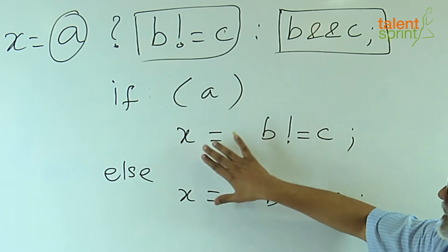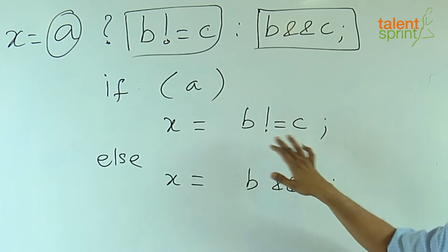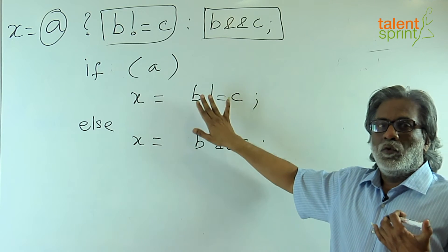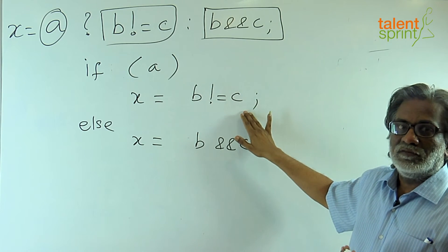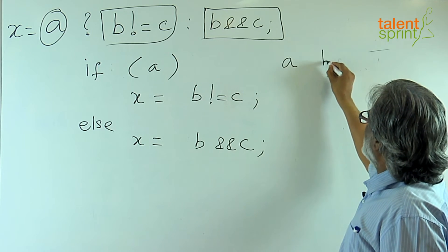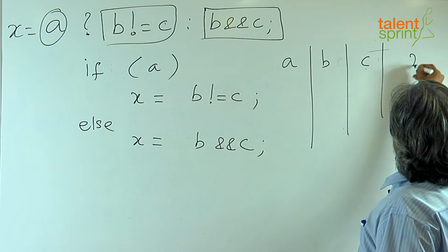When is this expression true? As you can see if B and C are of different types, that is one of them is true and one of them is false. So, we can build a truth table nicely like this. These are the A, B, C and x values.